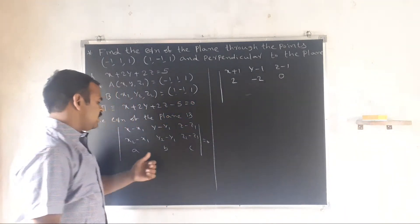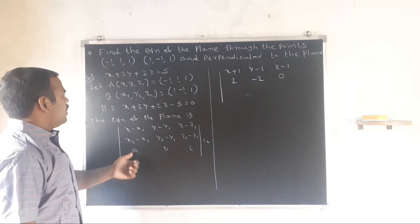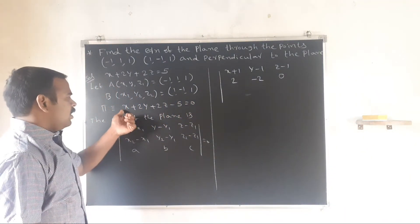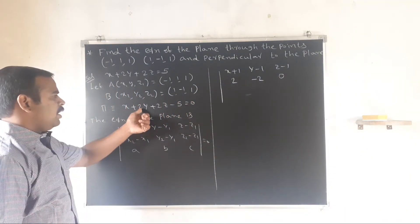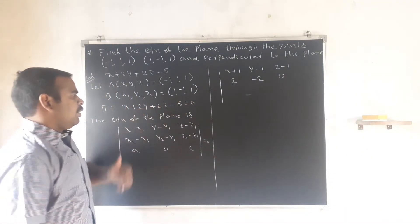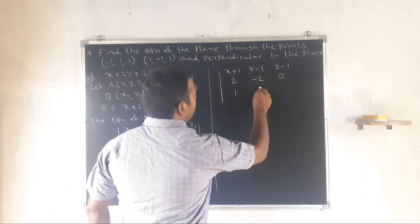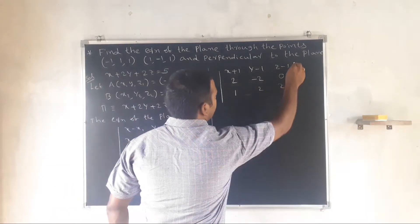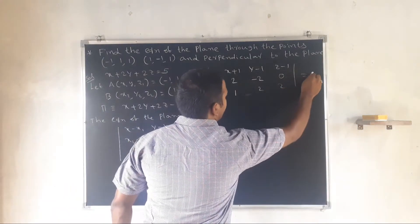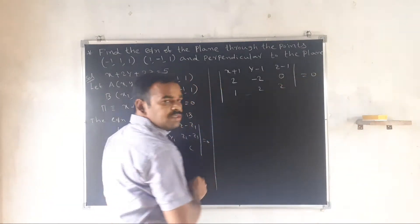Third row is (a, b, c). From the perpendicular plane x plus 2y plus 2z minus 5 equal to 0, the normal direction gives a equals 1, b equals 2, c equals 2. So this determinant is equal to 0.